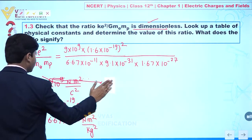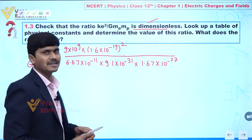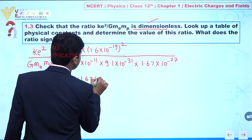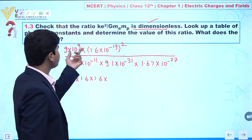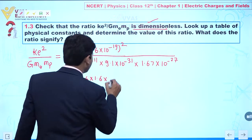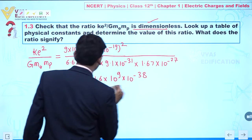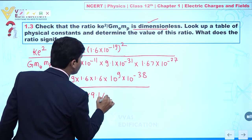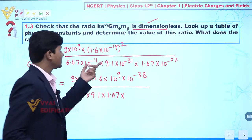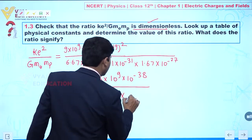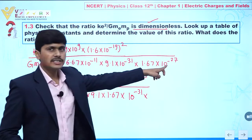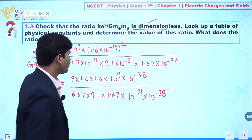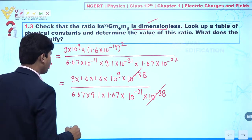This is a large calculation, but we can simplify it. Write all the values: 9 × 1.6 × 1.6 in the numerator with powers 10⁹ × 10⁻³⁸. In the denominator: 6.67 × 9.1 × 1.67 with powers 10⁻¹¹ × 10⁻³¹ × 10⁻²⁷, giving 10⁻⁶⁹. The 10⁻³⁸ terms cancel out.